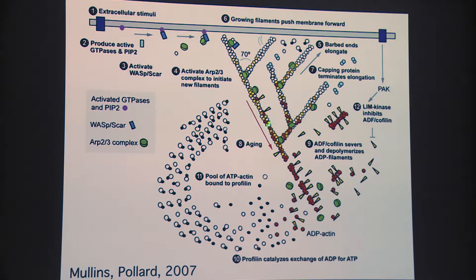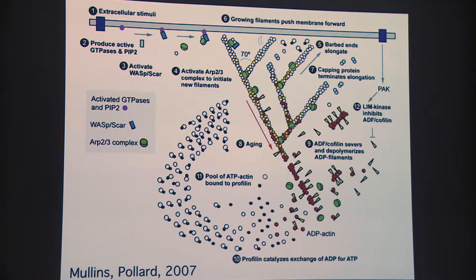You get this constant assembly and pushing against the plasma membrane by this actin network. This has been worked out in great detail—we know rate constants, concentrations, and binding constants for all the key factors involved in this process. This is through many labs, largely Tom Pollard's lab as well as Mary France Carlier's, just down the road in Gif.